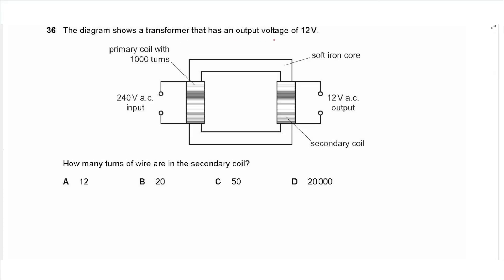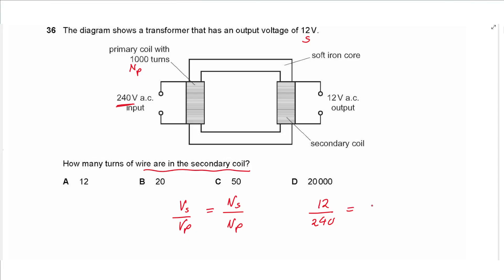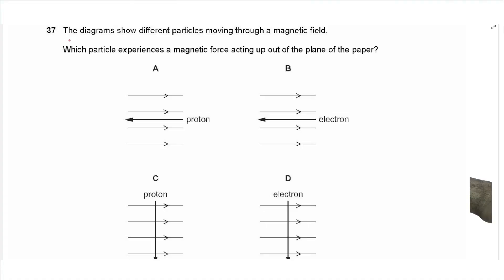Question 36: A transformer has a secondary voltage of 12 V, primary voltage of 240 V, and primary coil of 1000 turns. Using Vs/Vp = Ns/Np: 12/240 = Ns/1000. Cross-multiplying: Ns = 1000 × 12 ÷ 240 = 50 turns.